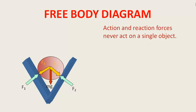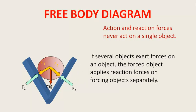इसको हमेशा ध्यान रखें — आपको free body diagram कैसे बनाने हैं। Several objects एक object पर force exert करते हैं, वो object उन forces पर reaction force apply करता है — object separately। जितनी forces लगेंगी, उनका उतना ही reaction होगा। Reaction की अभाव में body चलना शुरू कर देगी और F = ma हो जाएगा।